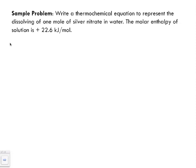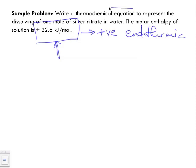Sample problem: Write a thermochemical equation to represent the dissolving of one mole of silver nitrate in water. The molar enthalpy of solution is plus 22.6 kilojoules per mole. So because this value is positive, we know that it's endothermic, which means when we are writing this value in terms of a thermochemical equation, it will be on the side of the products.